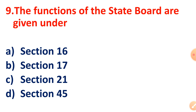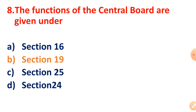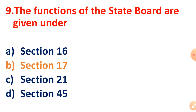Question 9: The functions of the State Board are given under which section? The correct answer is Section 17. So the functions of the Central Board are under Section 19, and the functions of the State Board are under Section 17.